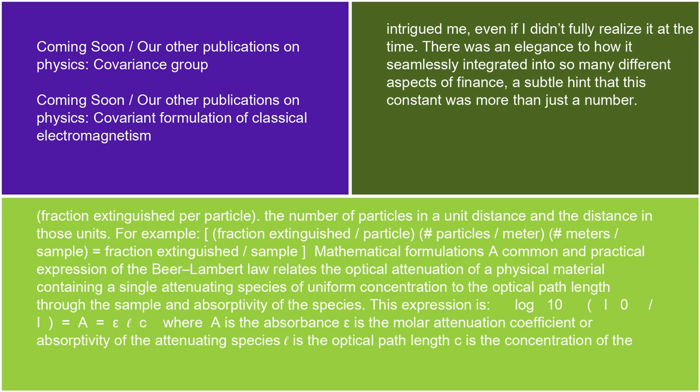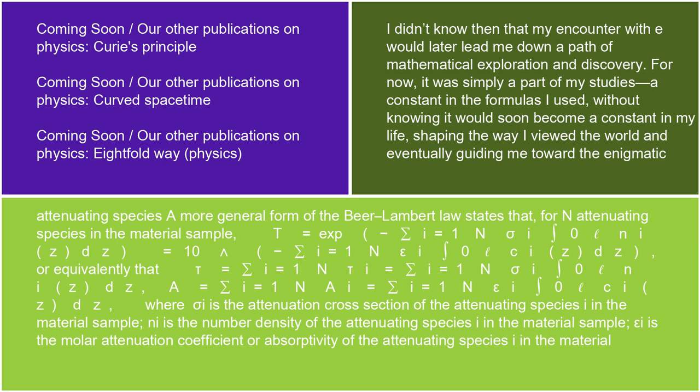Mathematical formulations. A common and practical expression of the Beer-Lambert Law relates the optical attenuation of a physical material containing a single attenuating species of uniform concentration to the optical path length through the sample and absorptivity of the species. This expression is: log₁₀(I₀/I) = A = εCℓ, where A is the absorbance, ε is the molar attenuation coefficient or absorptivity of the attenuating species, ℓ is the optical path length, and C is the concentration of the attenuating species.